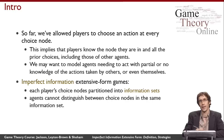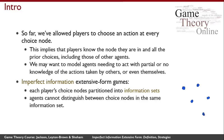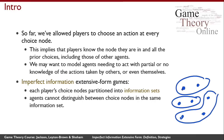So schematically, if these are some different choice nodes in the game that all belong to the same player, we might say these form one equivalence class, these form another, and these form a third. The player wouldn't know which of two choice nodes he was at when asked to make a choice, but he would know he's at one of those two and not one of the others, because they're in different equivalence classes.